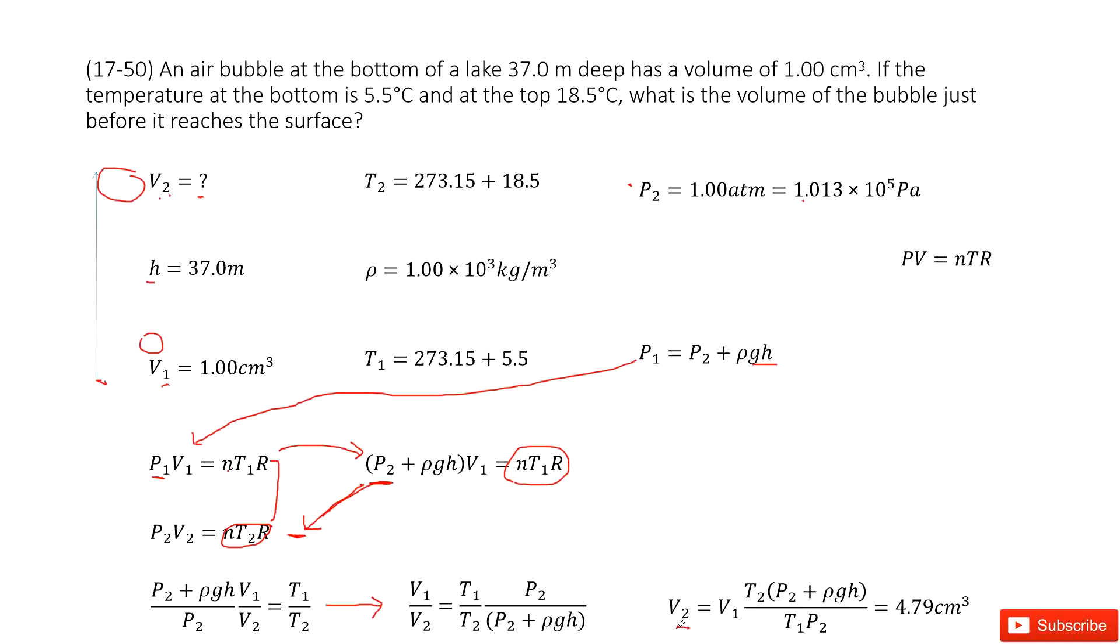Then we can find the function for V2. In this function, we can see V1, T2, P2, ρgh, T1, P2. All the quantities are given. You input the known quantities and get the answer. Thank you.